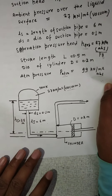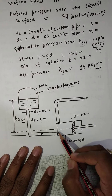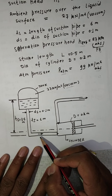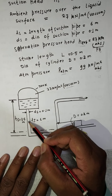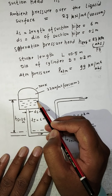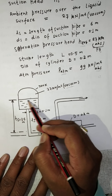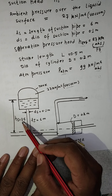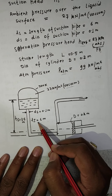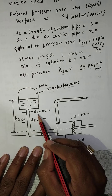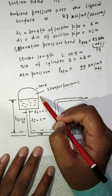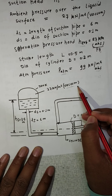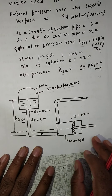This is the case we are discussing — this is the reciprocating pump cylinder, piston, piston rod, delivery pipe, and suction pipe. The suction head is from the liquid surface in the tank to the center of the reciprocating pump — 3.5 meters. Length of the suction pipe is 6 meters, diameter of the suction pipe is 0.1 meters. Above the tank, the pressure is 27 kN per meter square vacuum.